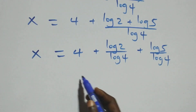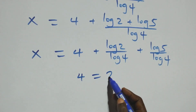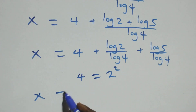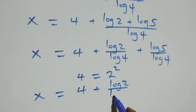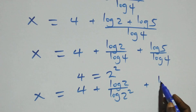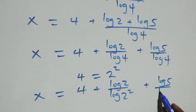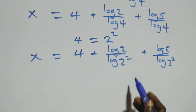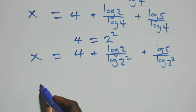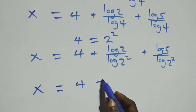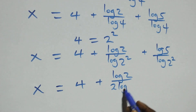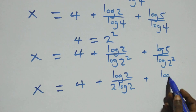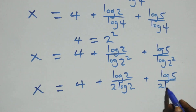Also here, 4 can be written as 2 times 2, that's 2 squared. So we have x equals 4 plus log 2 over log 2 squared plus log 5 over log 2 squared. We apply the power rule: the 2 comes down in both terms, giving x equals 4 plus log 2 over 2 log 2 plus log 5 over 2 log 2.